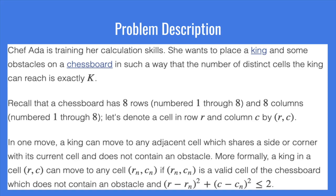The problem statement is that Chef Add is training her calculation skills, and she wants to place a King and some obstacles on a chessboard such that the number of distinct cells the King can reach is exactly K. A chessboard has 8 rows and 8 columns, and a King can move to any adjacent cell which shares a side or corner with its current cell and does not contain an obstacle.